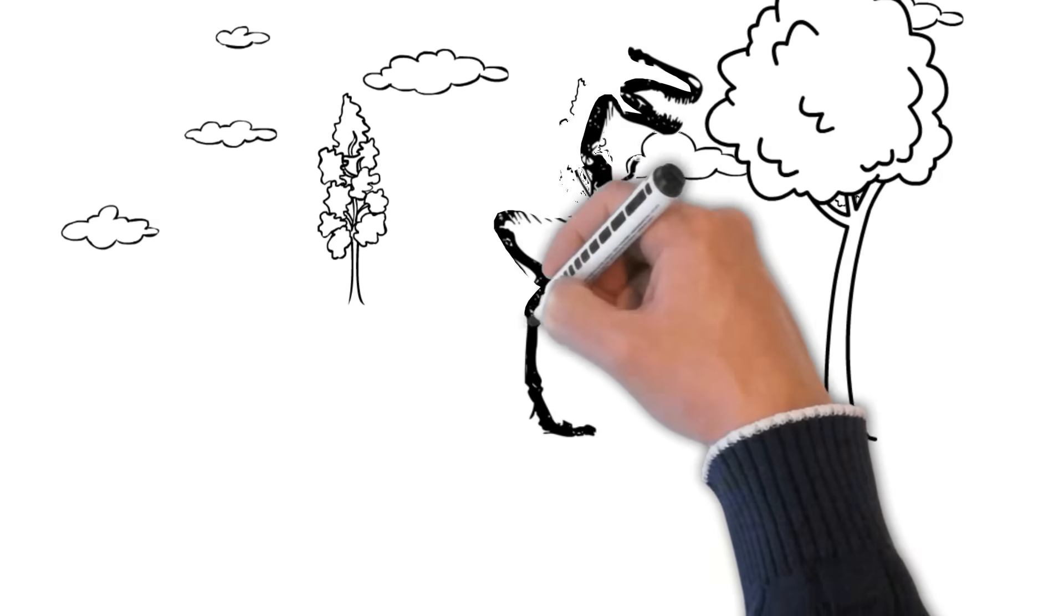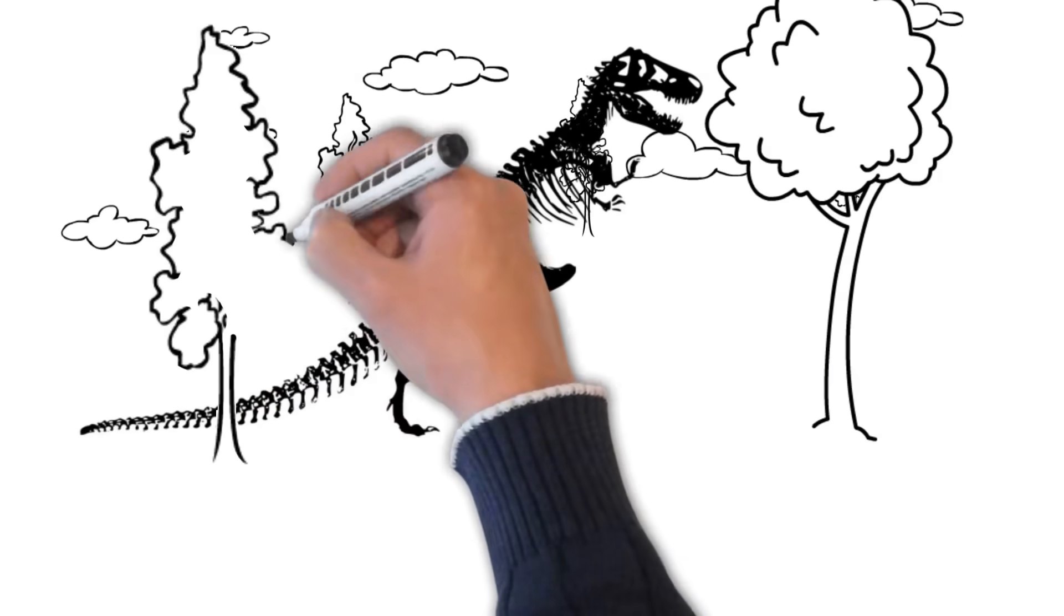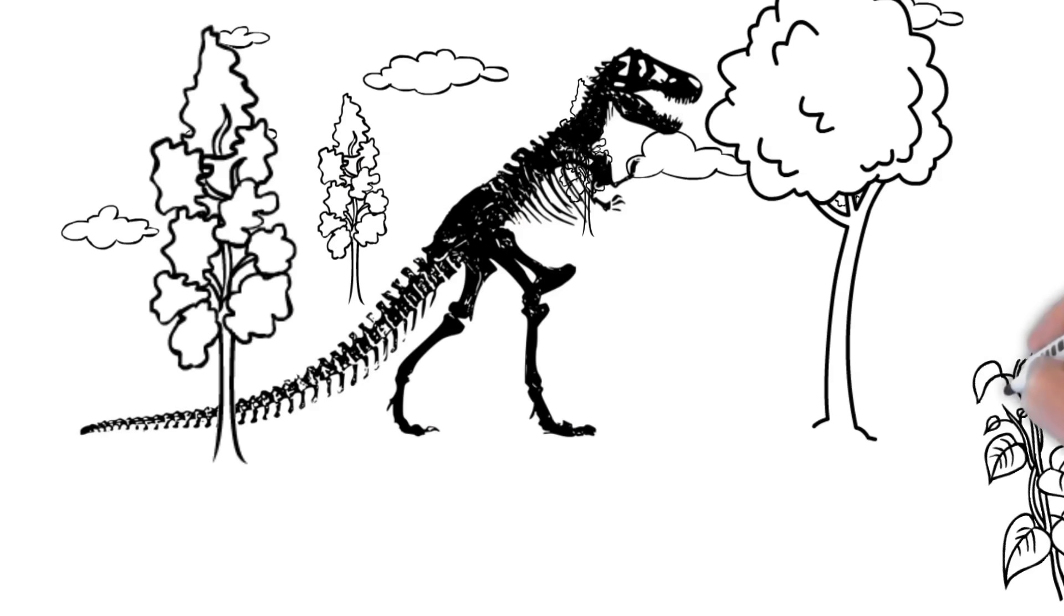This dinosaur was one of the top predators in what is now the Narmada Valley. Imagine Rajasaurus prowling the ancient landscapes, hunting for prey. What a sight that would have been!